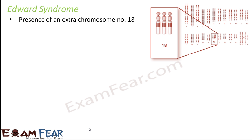Let's talk about Edwards syndrome. There is a presence of an extra chromosome number 18. We have 46 chromosomes existing in 23 pairs, with the last pair being the sex chromosomes — XX in females and XY in males. All others are autosomes, so Edwards syndrome is an autosomal disorder. Chromosome number 18, instead of the normal two chromosomes, has three chromosomes — an extra chromosome — which is why Edwards syndrome occurs. Edwards syndrome is also called trisomy 18.